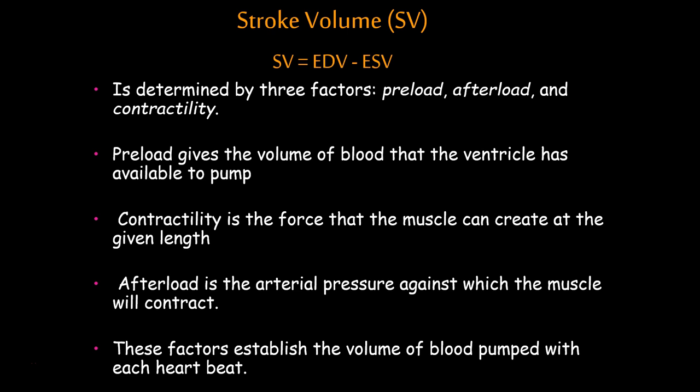Stroke volume is determined by preload, afterload, and contractility. Preload gives the volume of the blood that the ventricle has available to pump. Contractility is the force that the muscle can create at any given length. And afterload is the arterial pressure against which the muscle will contract. And combined, this is what establishes the amount of blood that's pumped with each heartbeat.